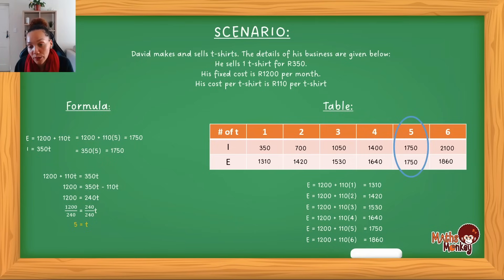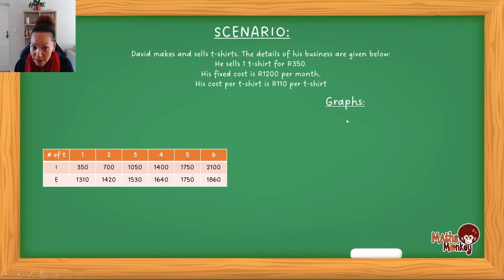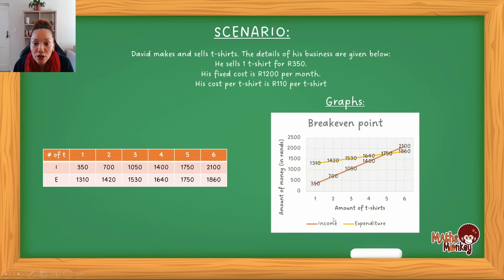So the last format we need to look at is actually looking at graphs. Now, most of the time, the graphs are taken from the table. So I've just moved this table from the previous example to this one so that you can actually see how this is done. Now, you must note that when you're doing the graphs now, there's going to be one graph that represents your income, there's going to be another graph that represents your expenses. And at the point where these two graphs touch each other, that will then be your break even point.